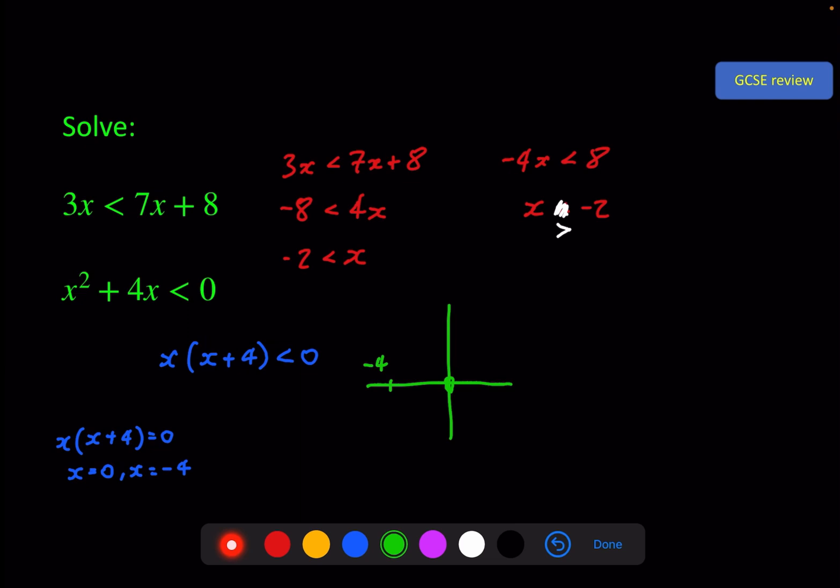And it's a positive quadratic, so it looks like this. And here I get three regions. I get the region where x is less than -4, between -4 and 0, and greater than 0. The question is which of those regions gives this less than 0. In this case, it is this region here between -4 and 0. So that is my solution.